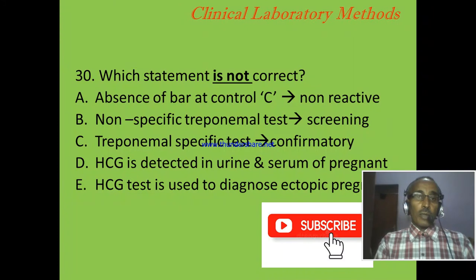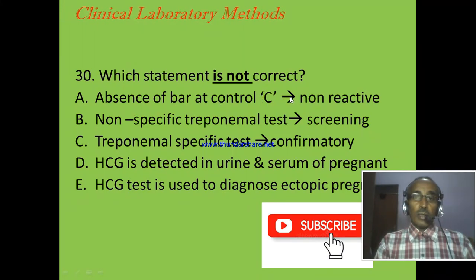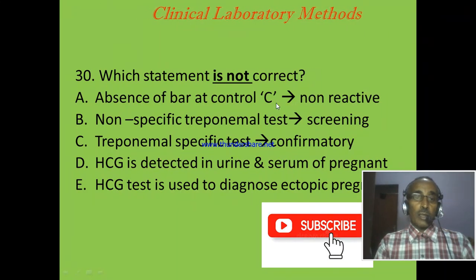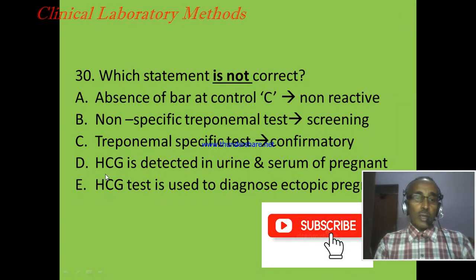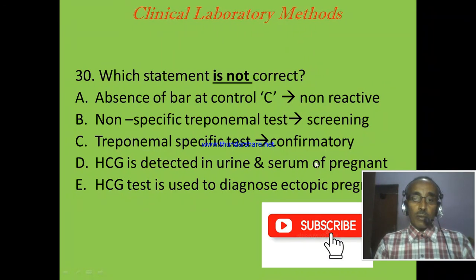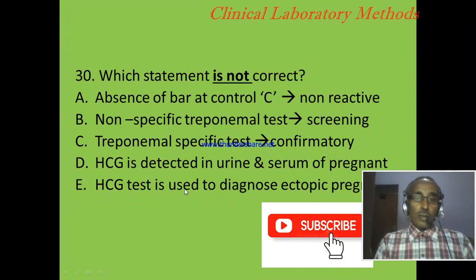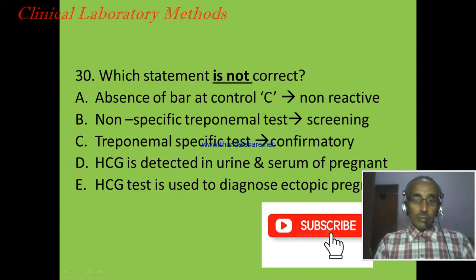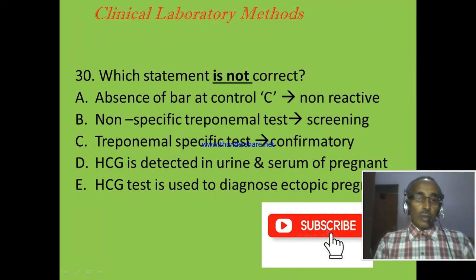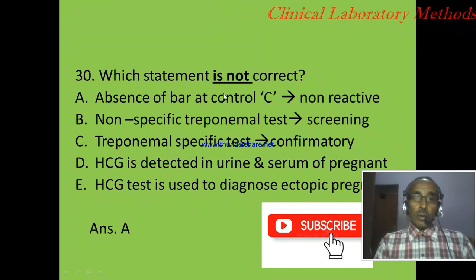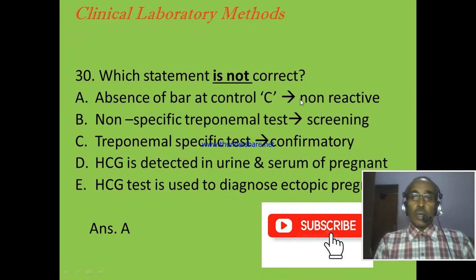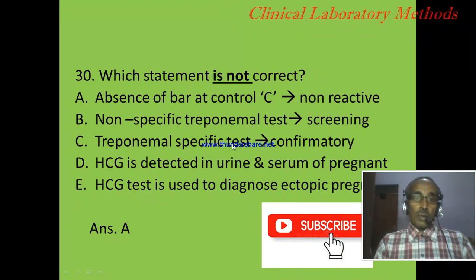Question 30, the last question: Which statement is not correct? A: Absence of a bar at the control (C) indicates non-reactive during immunochromatography test. B: Non-specific treponemal test is a screening test. C: Treponemal specific test is a confirmatory test. D: HCG is detected in urine and serum of pregnant women. E: HCG test is used to diagnose ectopic pregnancy. The correct answer is A, because absence of a bar at the control site is not interpreted as non-reactive but as an invalid test. The rest are correct.